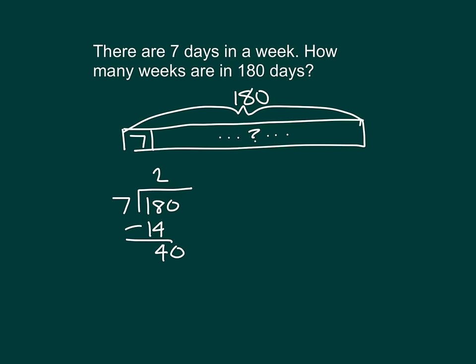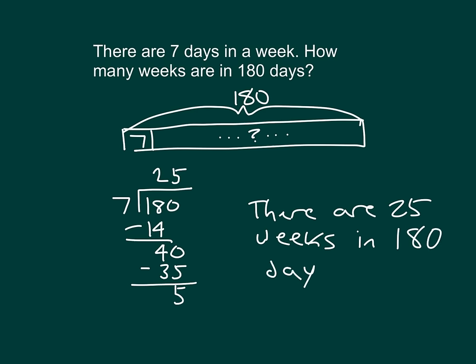40 divided by 7 is 5, because 5 times 7 is 35, and 40 minus 35 is 5. So there are 25 weeks in 180 days. Those leftover days with that remainder of 5 could not make up a whole week.